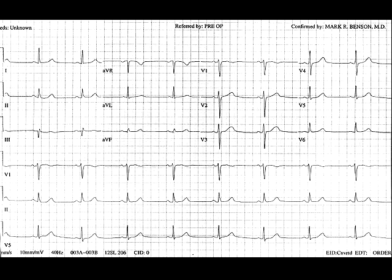A normal PR interval indicates rapid conduction through the AV node. A narrow QRS indicates that ventricular depolarization is occurring via the AV node and that the conduction system is healthy, without bundle branch block.